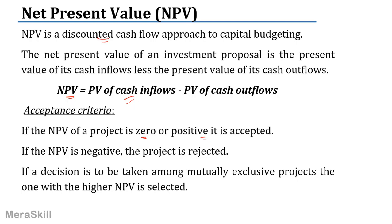If your cost of capital is 12%, at 12% there is no actual addition to the profit but there is a return — 12% return we are getting. Of course, if the net present value is negative, the project is rejected. Now, what if you have two or three mutually exclusive projects and you need to choose any one? Which one will you choose? We choose the one with the highest net present value. The one with the higher NPV is selected.